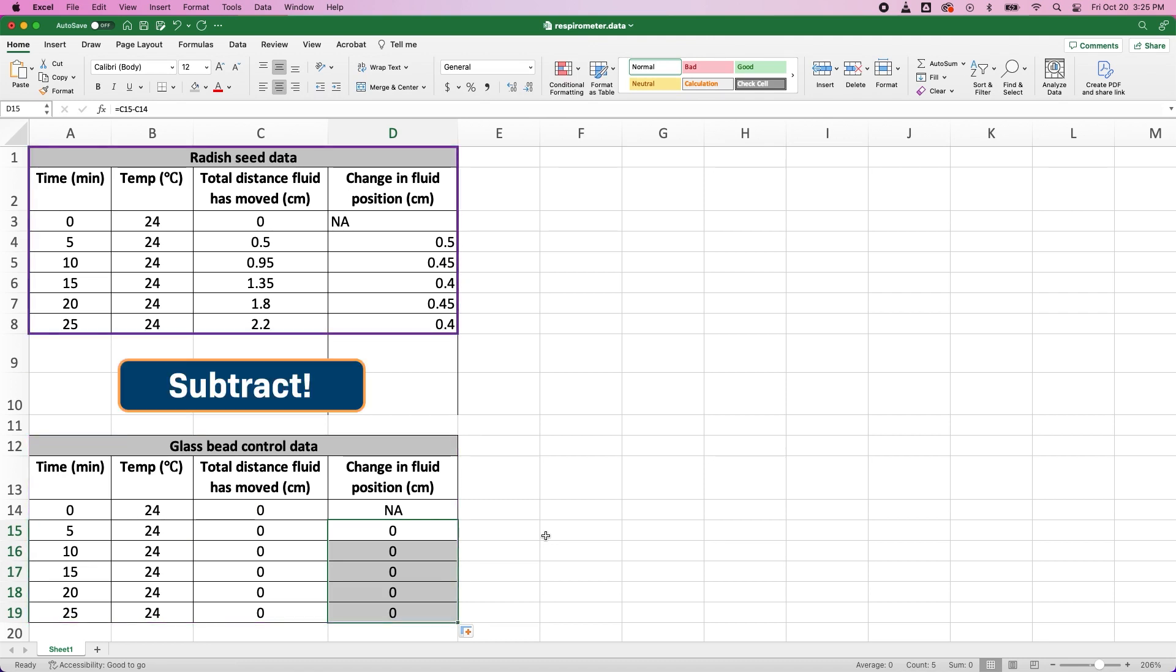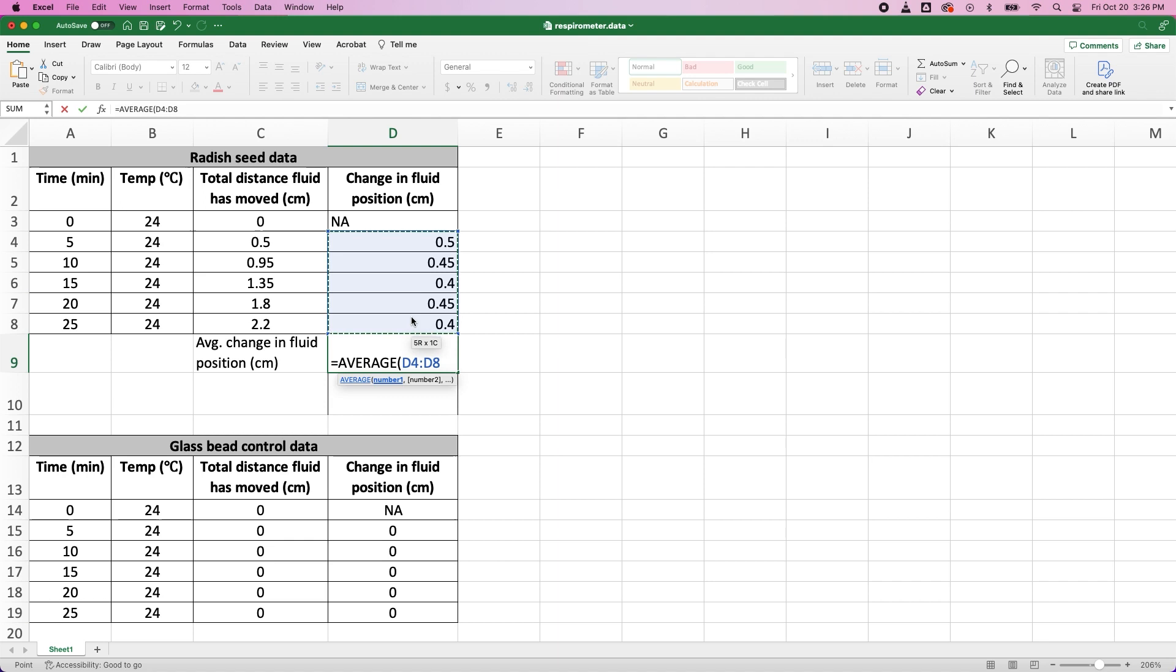If it hadn't, I'd subtract the length that the fluid moved in my control data from the lengths in my experimental data. Once I've made any necessary adjustments to my data tables, I can calculate an average respiration rate from the values in the fourth column, and divide that average by 5 to get the mean change in fluid position per minute.